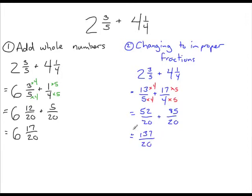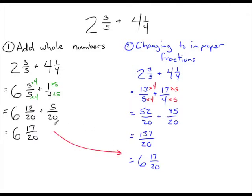Before we finish, let's convert this improper fraction back to a mixed fraction. How many times does 20 go into 137? It goes in 6 times with a remainder of 17, which we write as our numerator over 20 as the denominator. You'll notice that in both cases we end up with the same answer. So when adding fractions, whether you add whole numbers first or convert to improper fractions, you get the same result.